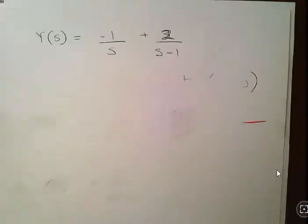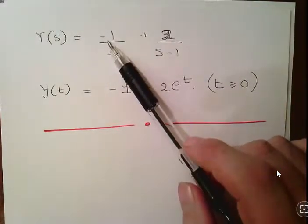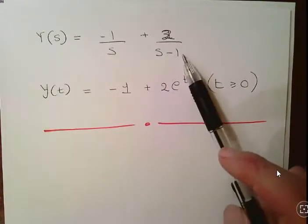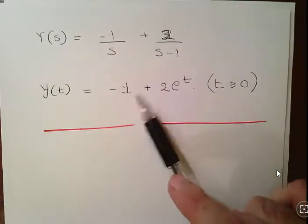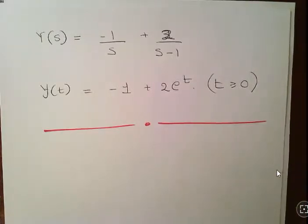Let's piece it all together. y of s equals minus 1 over s plus 2 over s minus 1. Get the inverse Laplace transforms of both of those. We get minus 1 plus 2 times e to the t, or you can switch that around, 2e to the t minus 1 for t greater or equal to 0. So that's it. Thank you.